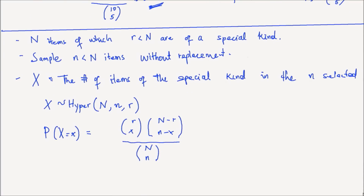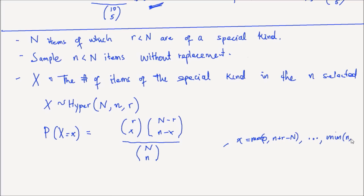The support of this hypergeometric random variable is that x ranges from the maximum of 0 or (n plus r minus capital N), up to the minimum of little n and r.